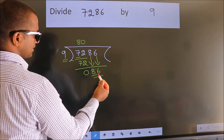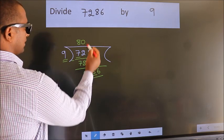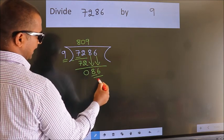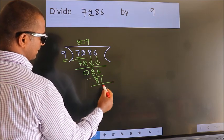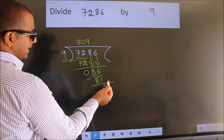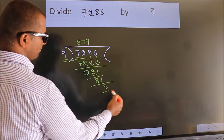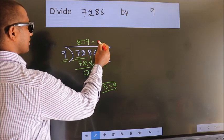So, 86. A number close to 86 in the 9 table is 9 times 9, 81. Now we subtract. We get 5. No more numbers to bring down, so we stop here. This is our remainder. This is our quotient.